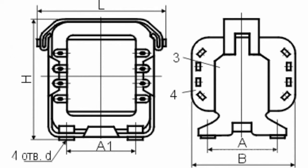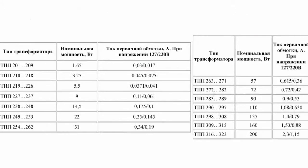The rated power of TSC transformers is from 57 to 200 volt-amperes, with a primary winding voltage of 220 V. The voltage of the secondary windings is 0.36 to 2 V, and the primary winding current is 0.36 to 0.88 amperes.